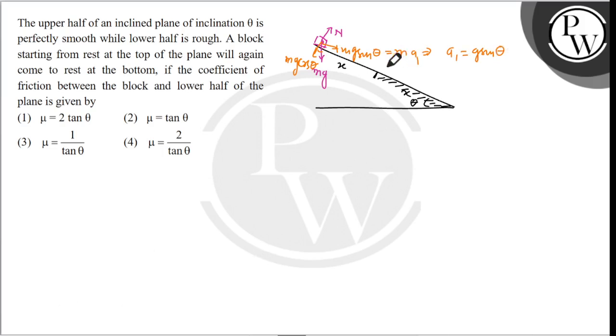Now applying kinematics: v² - 0² = 2 × acceleration g sin θ × distance X. So we get v² = 2gX sin θ. This is equation number one.